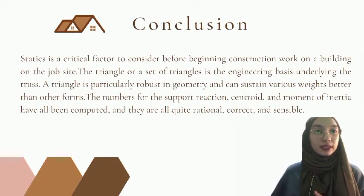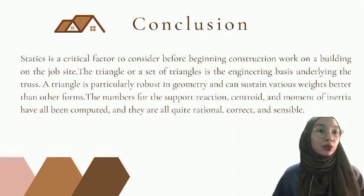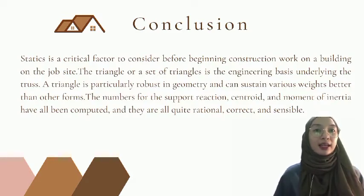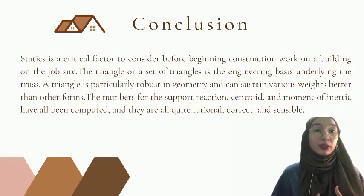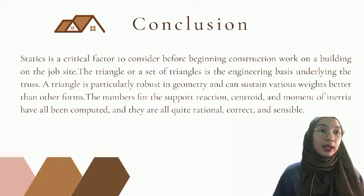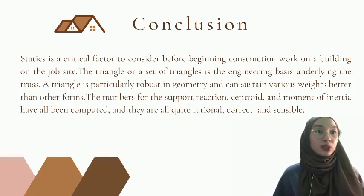In conclusion, roofing is a critical factor to consider before beginning construction. The triangle or set of triangles is the engineering basis underlying the truss, and a triangle is particularly robust in geometry, able to sustain various weights better than other forms. The support reaction, centroid, and moment of inertia have all been computed and are rational. This structure may be considered sturdy and robust, and the materials used are acceptable for dwelling construction.